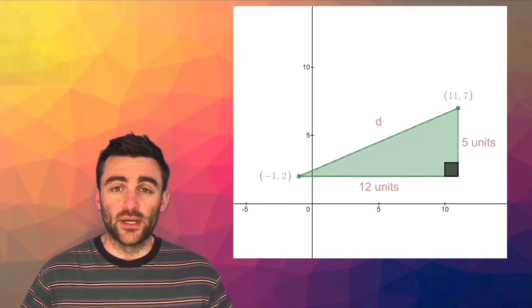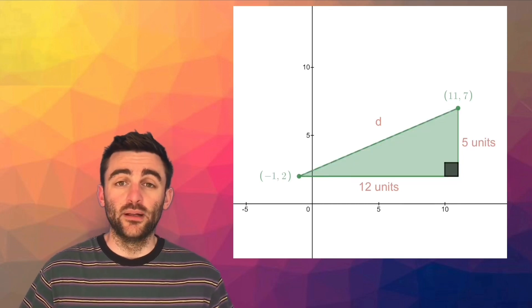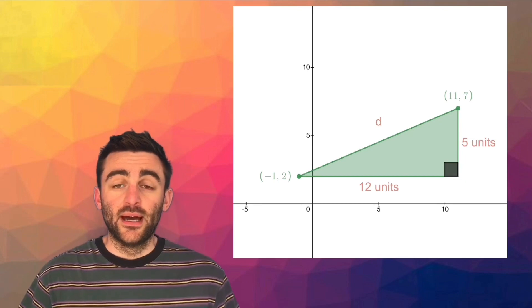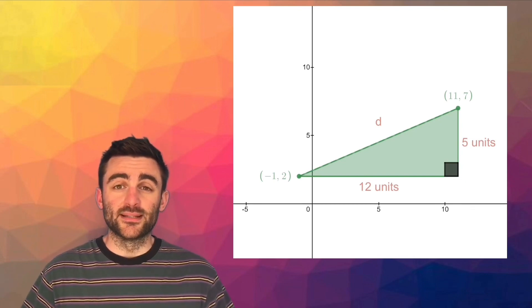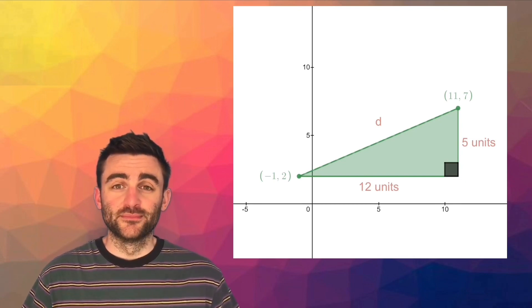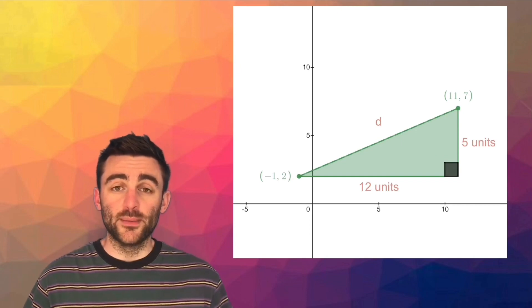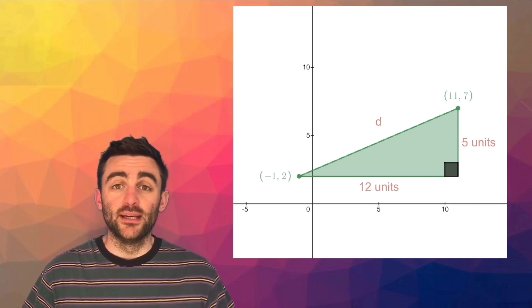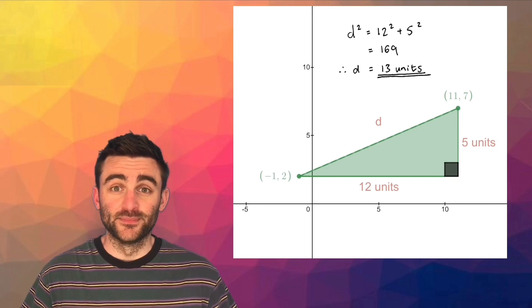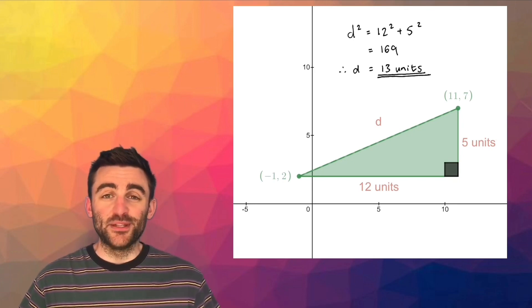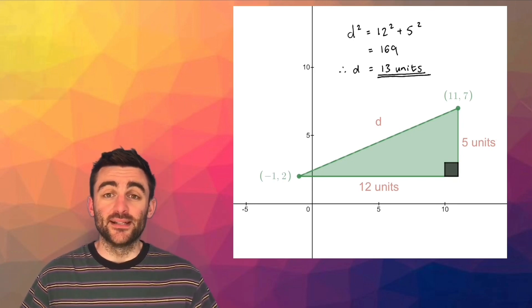So we have a right-angled triangle with sides 12, 5, and d for distance is the hypotenuse. Hopefully you've spotted that the way we calculate the distance between the two points is by Pythagoras' theorem. And so the distance between the two points in this case is 13 units.